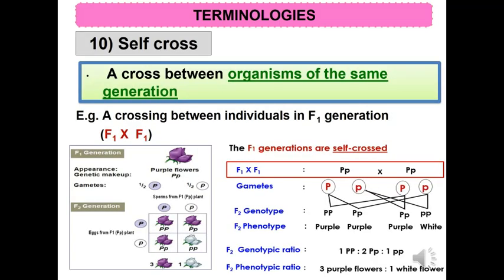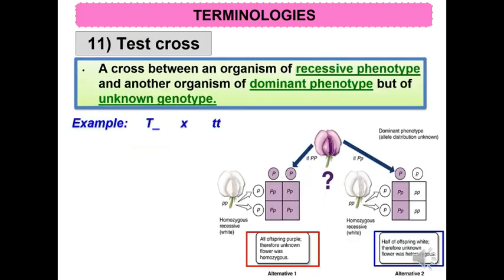A self-cross is a cross between organisms of the same generation — for example, a crossing between individuals in the F1 generation. A test cross is a cross between an organism of recessive phenotype and another organism of dominant phenotype but of unknown genotype. It is used to determine the genotype of an individual with the dominant phenotype; the individual must have one dominant allele but could be either homozygous dominant or heterozygous.